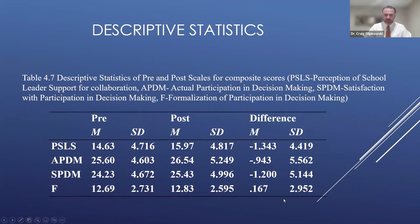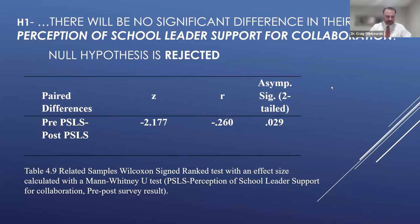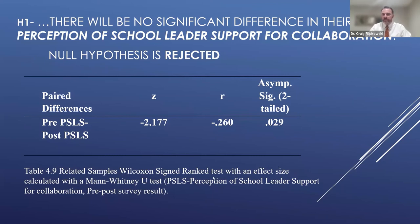This is probably our most important finding: the null hypothesis was rejected when testing for a significant difference in perception of school leader support for collaboration. You can see there is a significant finding of p equaling 0.029. These are non-parametric findings — a paired t-test was conducted but was not able to meet assumptions, so we used the Related Samples Wilcoxon Signed Rank Test. Additionally, the effect size from the Mann-Whitney U test was negative 0.260, which is considered a small effect size.